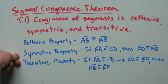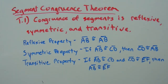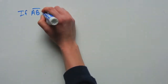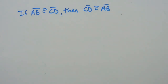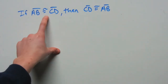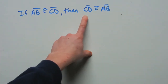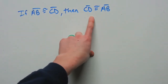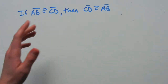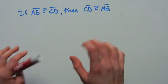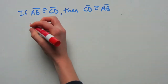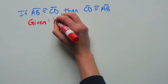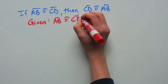So let's go ahead and prove the segment property, and we're going to prove that in paragraph form. The symmetric property says that if segment AB is congruent to segment CD, then segment CD is congruent to segment AB. What we're trying to prove is that segment CD is congruent to segment AB. Now that we have an understanding of what we're supposed to do, let's write down the given: AB is congruent to CD.